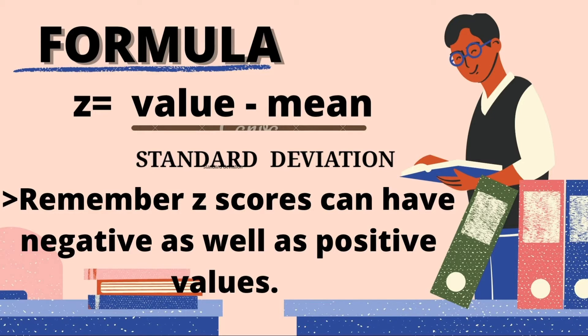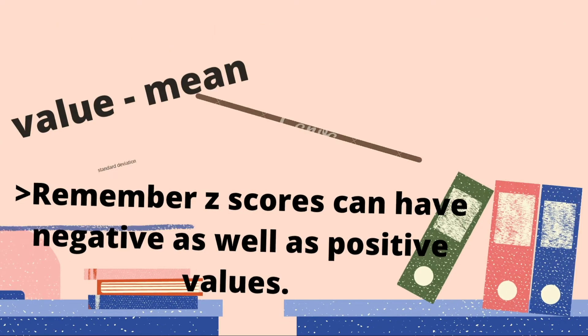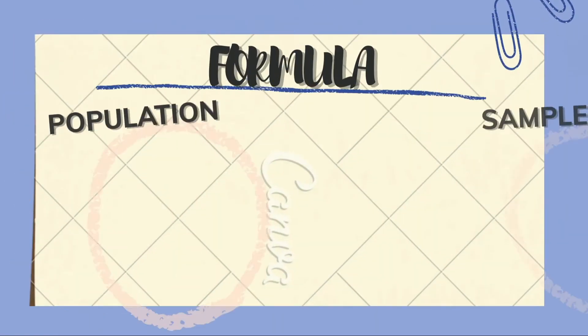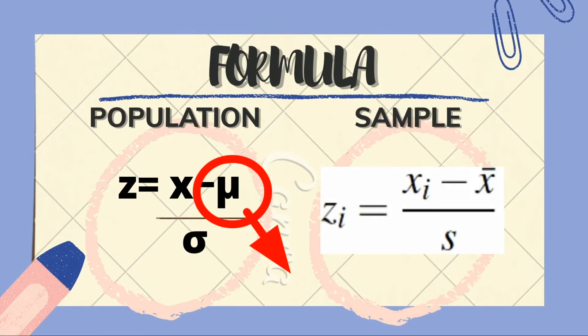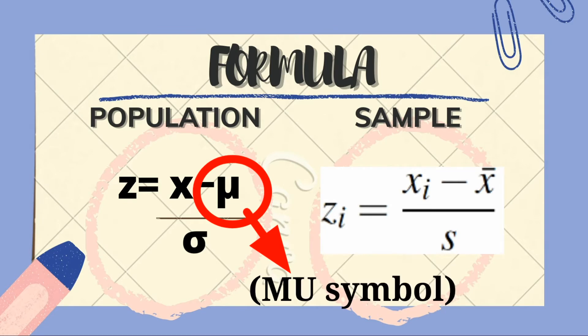Always remember, Z-score can have negative as well as positive values. For population data, we're going to use the mu symbol: x minus mean over the standard deviation. For sample data, we're going to use the formula x minus the mean over the standard deviation.